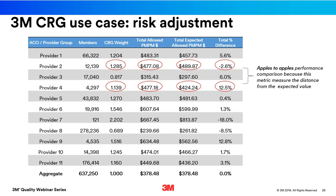CRGs are used to support value-based purchasing contracts in 11 states, measuring and paying provider entities such as ACOs and provider groups. In an example, spending per member per month by providers two and four appear almost identical without factoring in disease burden. After applying CRG risk adjustment, provider two is actually treating a sicker population and is therefore expected to spend more given their case mix. This enables an apples-to-apples comparison of provider performance.